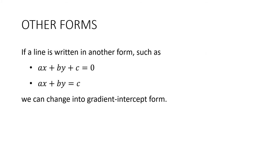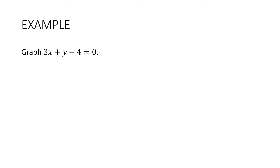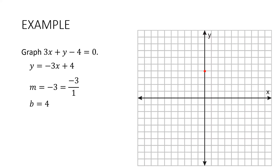If a line is written in another form, like general form or standard form, we can change it into gradient intercept form. So let's graph 3x plus y take away 4 equals 0. Firstly I'm going to make y the subject: y is equal to negative 3x plus 4. Our gradient is negative 3, which we write as negative 3 on 1 — instead of going up 3, we go down 3 as we go along to the right. Our y-intercept is 4. So on our graph, we start at 4 and go down 3 across 1, then down 3 across 1 again. Draw in the line and label the line.